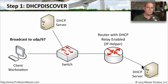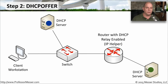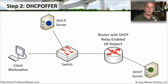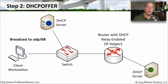Once those DHCP servers have heard the broadcast from the device trying to discover them, we move to step two: DHCP Offer. The DHCP server puts together an IP address configuration and sends that offer back to the client workstation over another broadcast on UDP port 68.